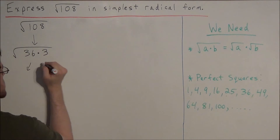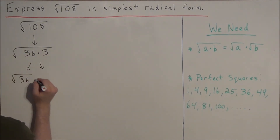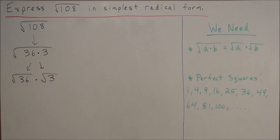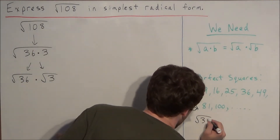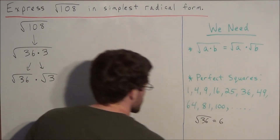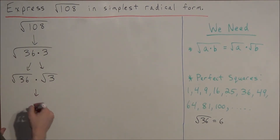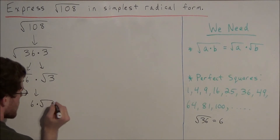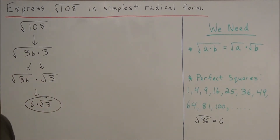We can say that this is the square root of 36 times the square root of 3. The point of finding a perfect square factor is that we can now evaluate the square root of 36, which equals 6. So in the next line, we have 6 times the square root of 3. And this would be in simplest radical form.